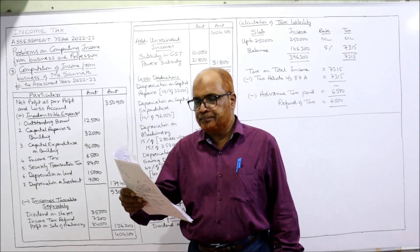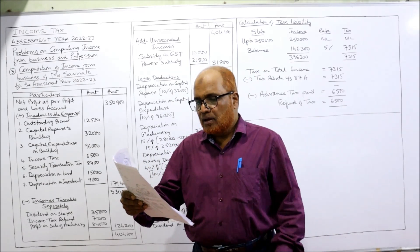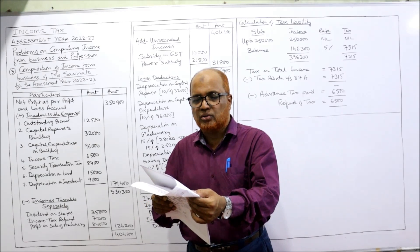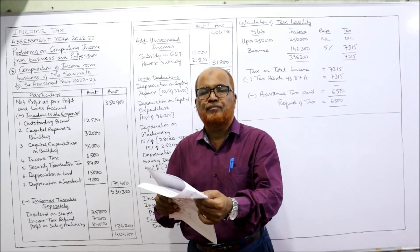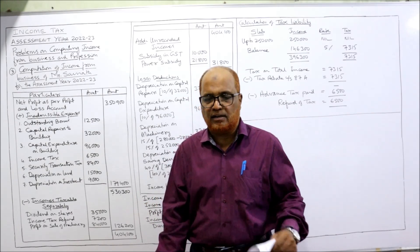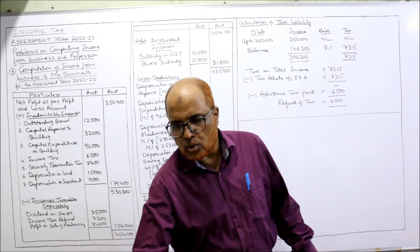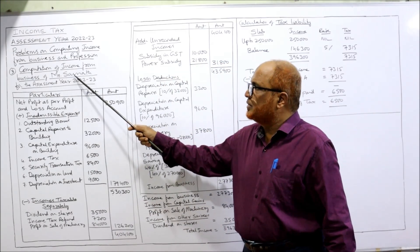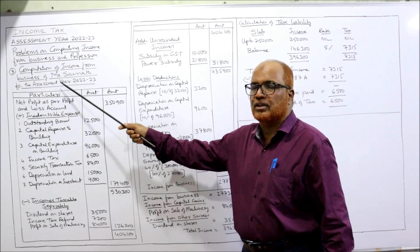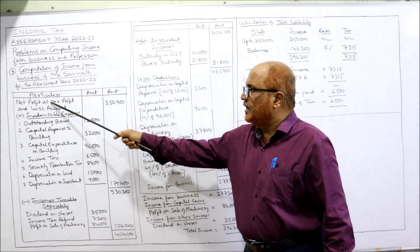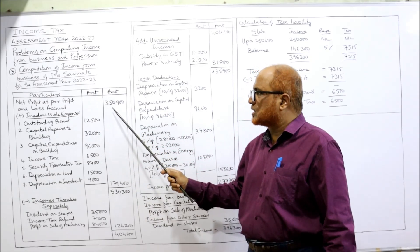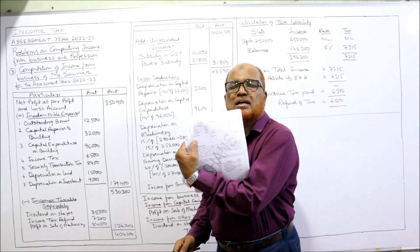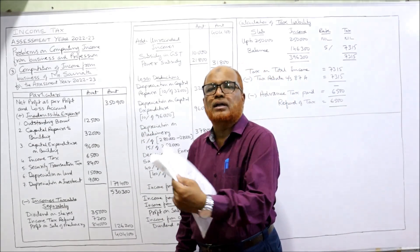The profit and loss account is given. The net profit as per the profit and loss account is ₹3,50,900. The format is: Computation of Income from Business of Mr. Sainath for the assessment year — net profit as per profit and loss account ₹3,50,900, which is the last item given on the debit side.